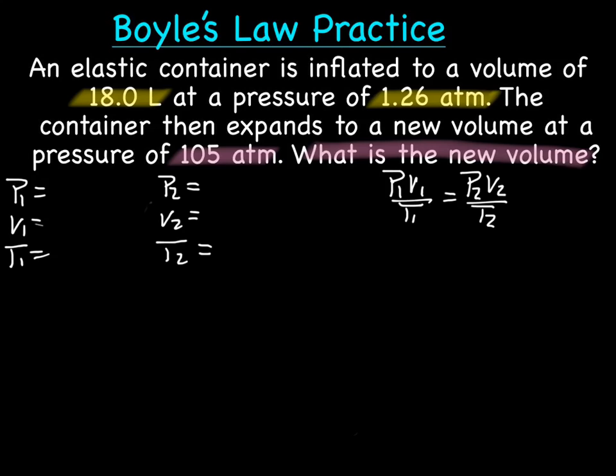Alright, so when we plug those in, we'll have V1 equals 18 liters and P1 equals 1.26 ATM for the 1s. For our 2s, we have P2 equals 105 ATM and V2 equals X. We don't need to worry about the Ts because temperature is held constant.